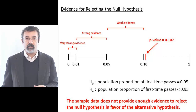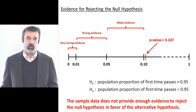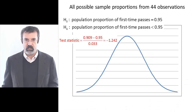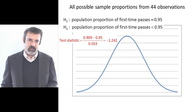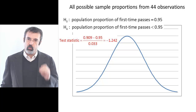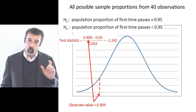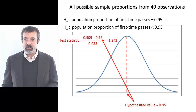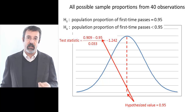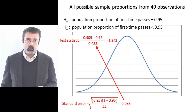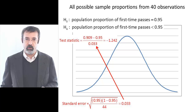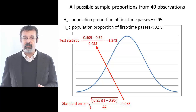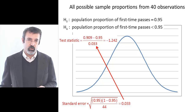To calculate the p-value, we begin by constructing a test statistic. The test statistic is the value we observed, 0.909, minus the value we hypothesized, 0.95, divided by the standard error of the proportion, 0.033. Our test statistic in this case is negative 1.242.